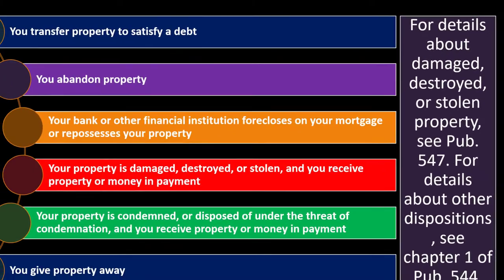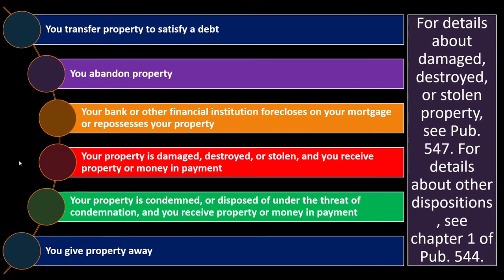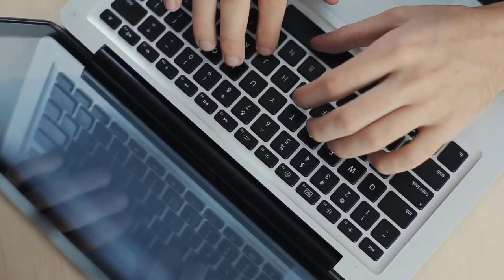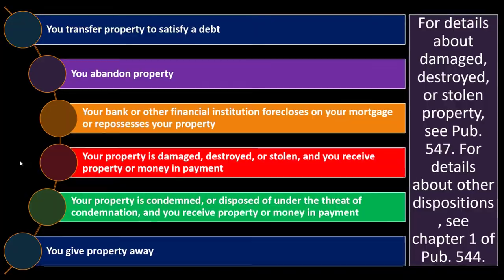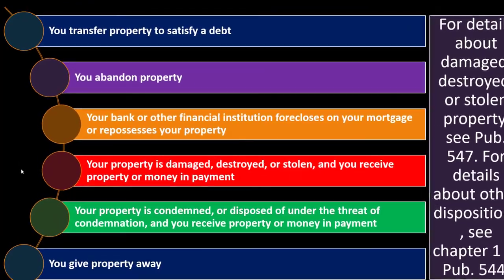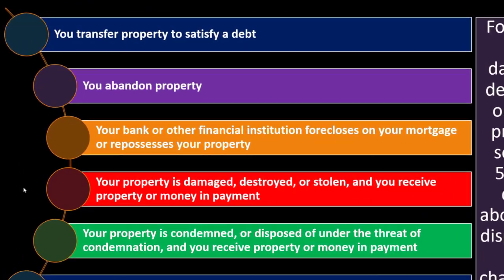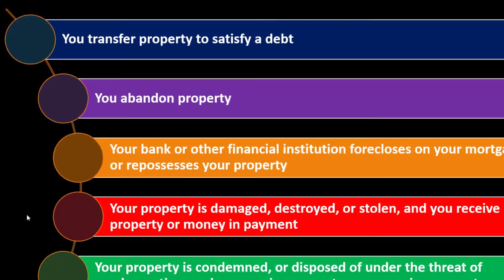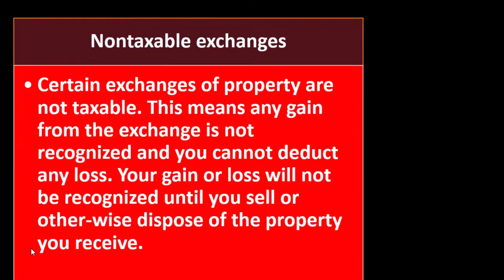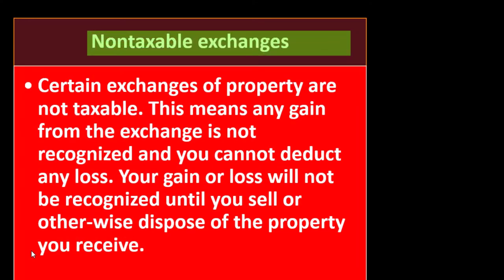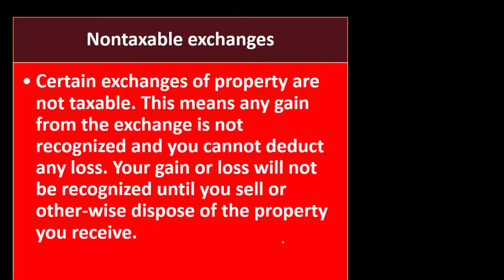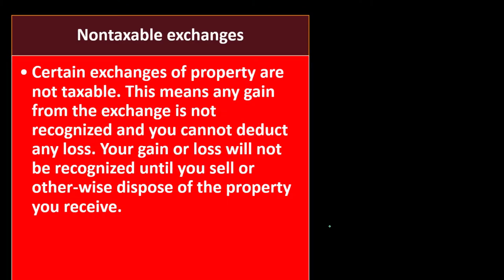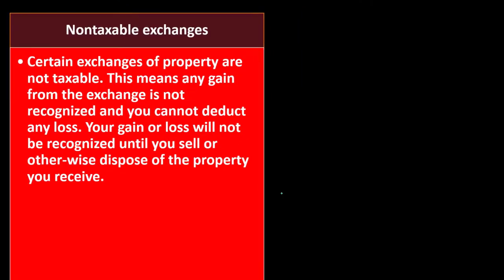For details about damaged, destroyed, or stolen property, see Publication 547. For details about other dispositions, see chapter one of Publication 544.